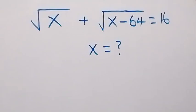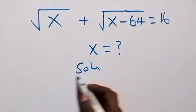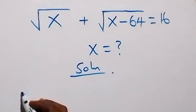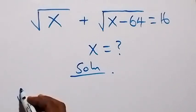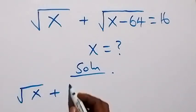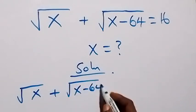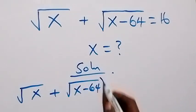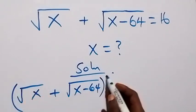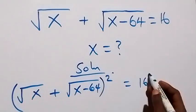Hello and welcome to how to solve this nice square root problem. From what is given here, let's take the square on both sides. That is, we have (√x + √(x−64))² equals 16².